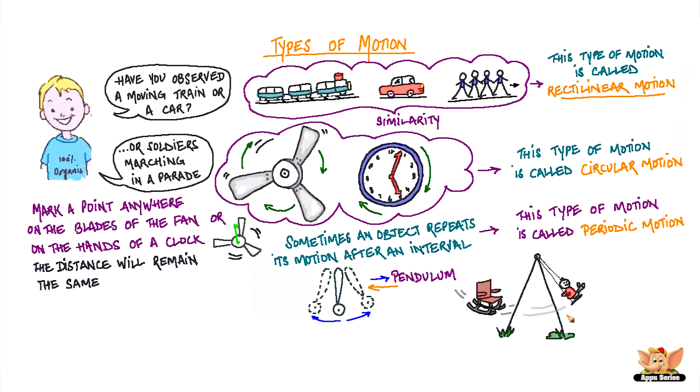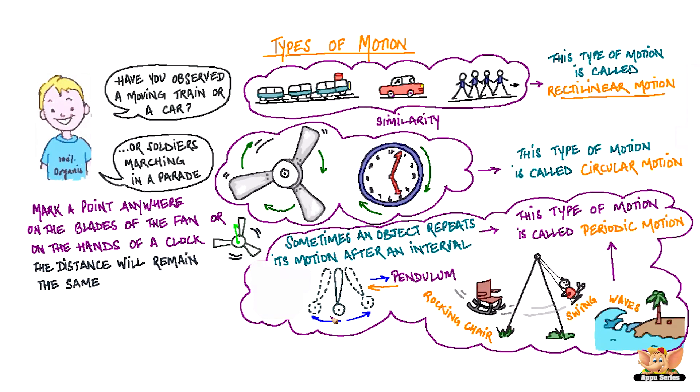The motion of a pendulum, a child on a swing, a rocking chair, and even waves on the beach - these are all examples of periodic motion, where motion is repeated after regular intervals.